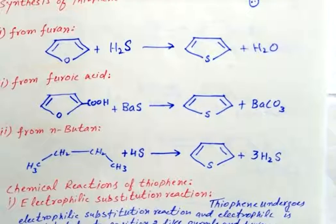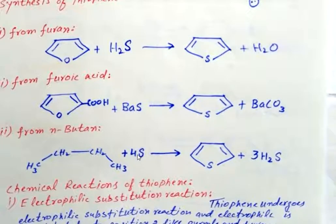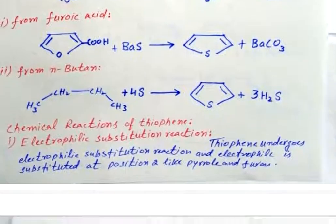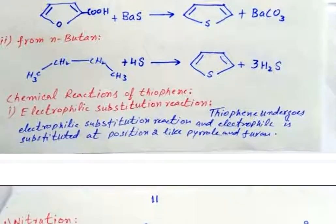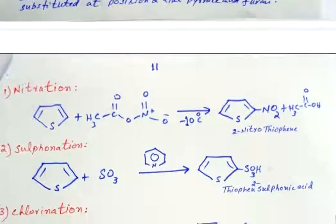The third method is the commercial preparation of thiophene. In this method, butane is heated with sulfur at 600 degrees Celsius, and as a result thiophene is prepared.